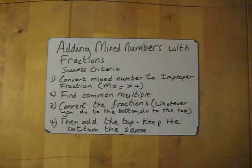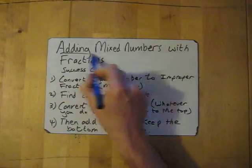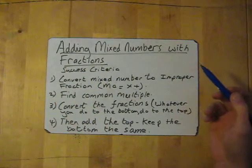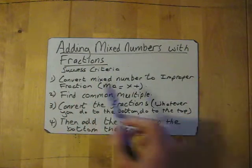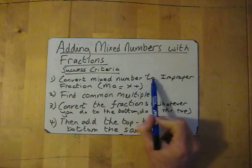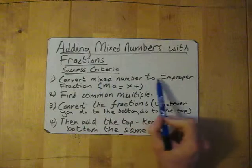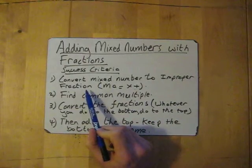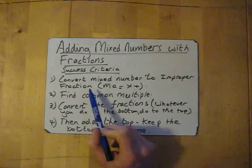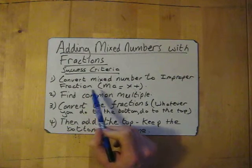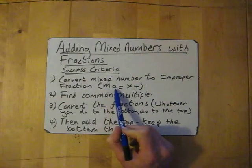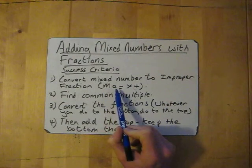We're going to have a go at adding mixed numbers with fractions. Now this looks like it's going to be tricky but it's actually very simple and straightforward. The first thing you need to do is convert that mixed number into an improper fraction. I've got a video which shows you how to do this — all you basically do is ask your MA for help, which means multiply and add the mixed number, and that gives you the improper fraction.